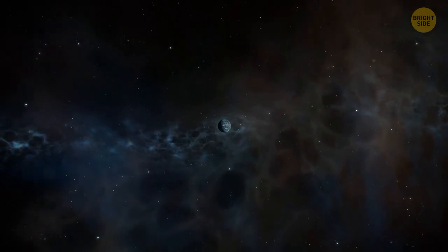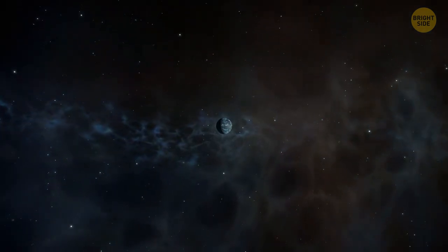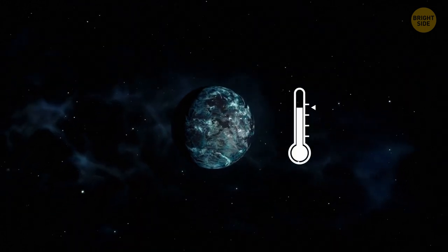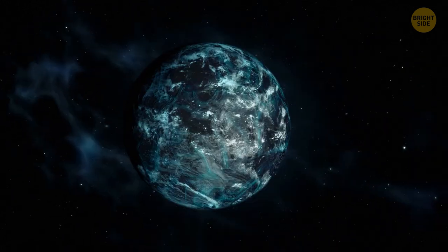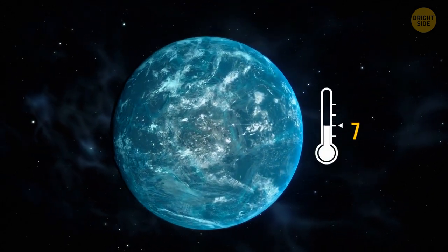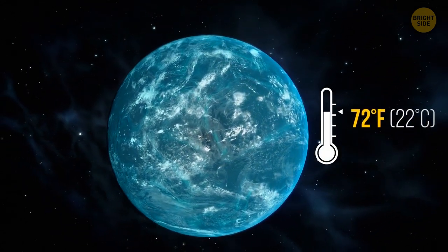So, if Kepler-22b has water but no atmosphere, scientists think that the average temperature there could be around 12 degrees Fahrenheit. But, if there's also an Earth-like atmosphere, then the temperature can reach 72 degrees Fahrenheit. That would be nice.